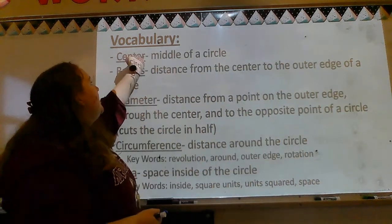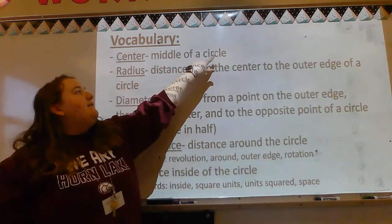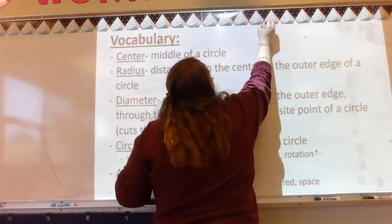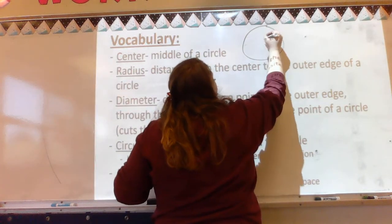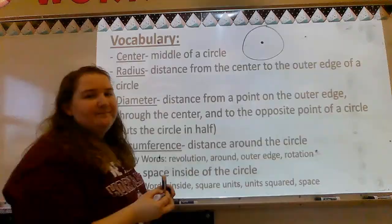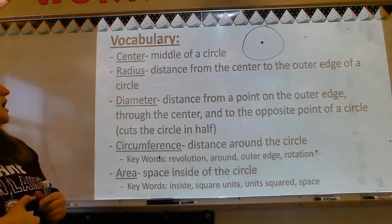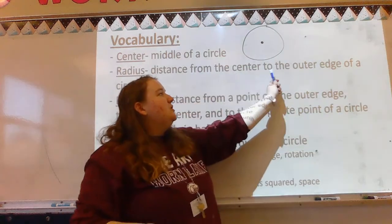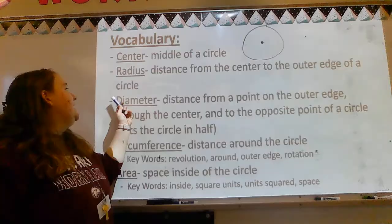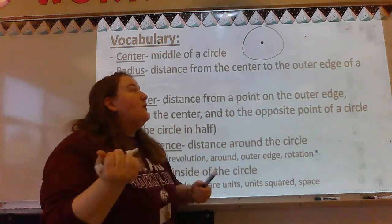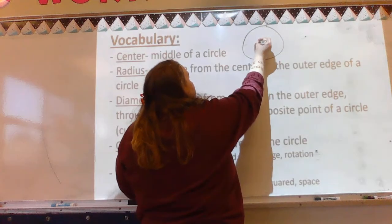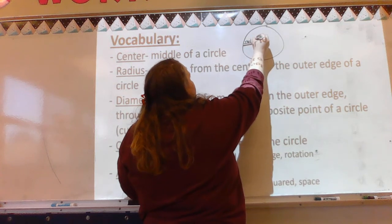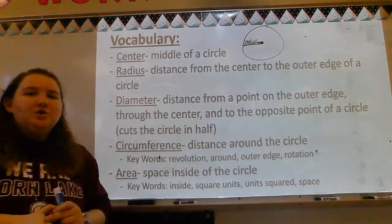Vocabulary — five vocab words. Center: the center is the middle of a circle. Radius: radius is the distance from the center to the outer edge of a circle. We go from the center to the outside — that is your radius.